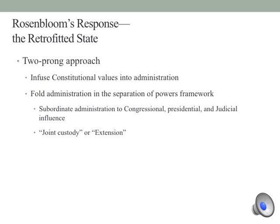To put this in a broader theoretical framework, we're going to use Rosenblum's retrofitted state. He designs this theory on a two-pronged approach. What the APA, the Administrative Procedure Act, did was infuse constitutional values into the administrative state. In order to make it legitimate, especially in light of separation of powers concerns, constitutional values are going to be infused within these administrative operations. The second aspect is to fold administration into the separation of powers framework. Rosenblum outright rejects any notion that administration is the fourth branch of government — meaning independent and autonomous with powers distinct from other branches.